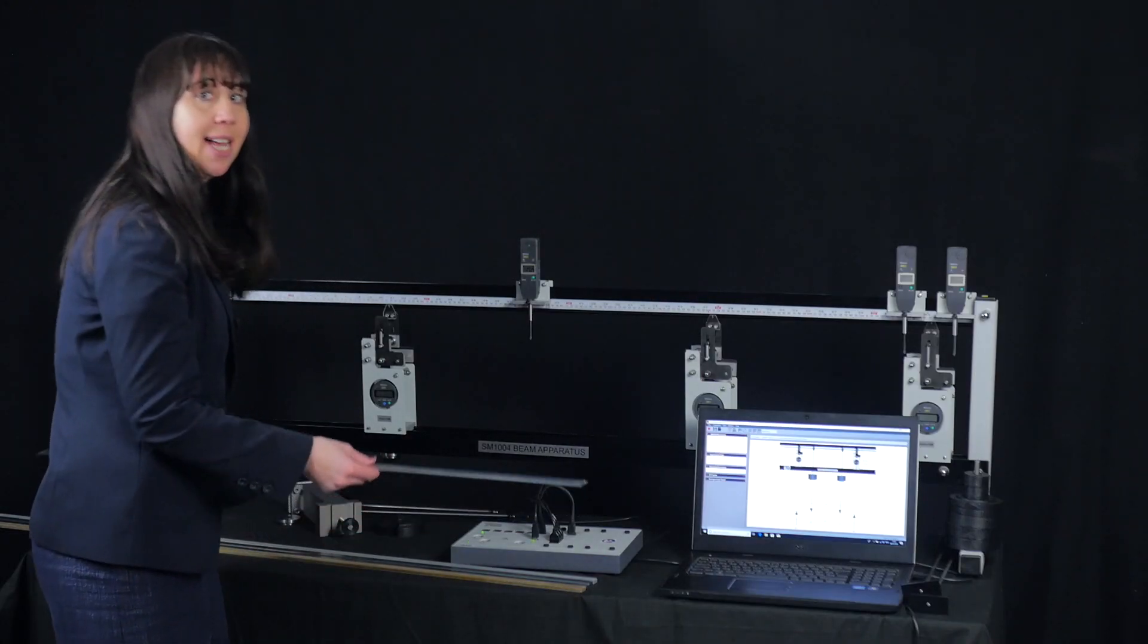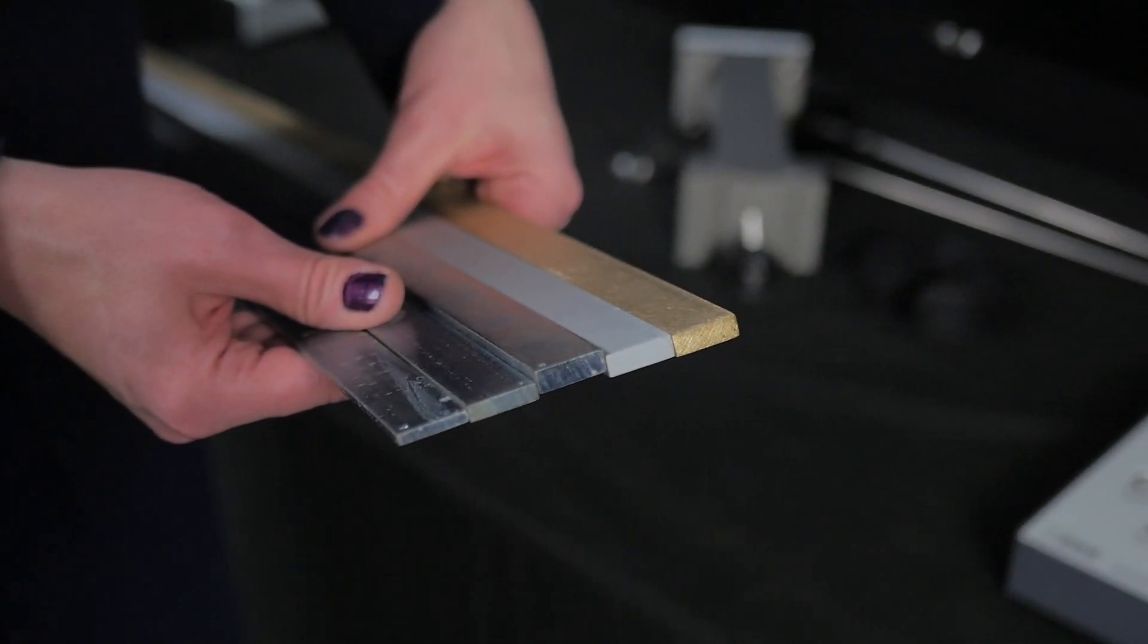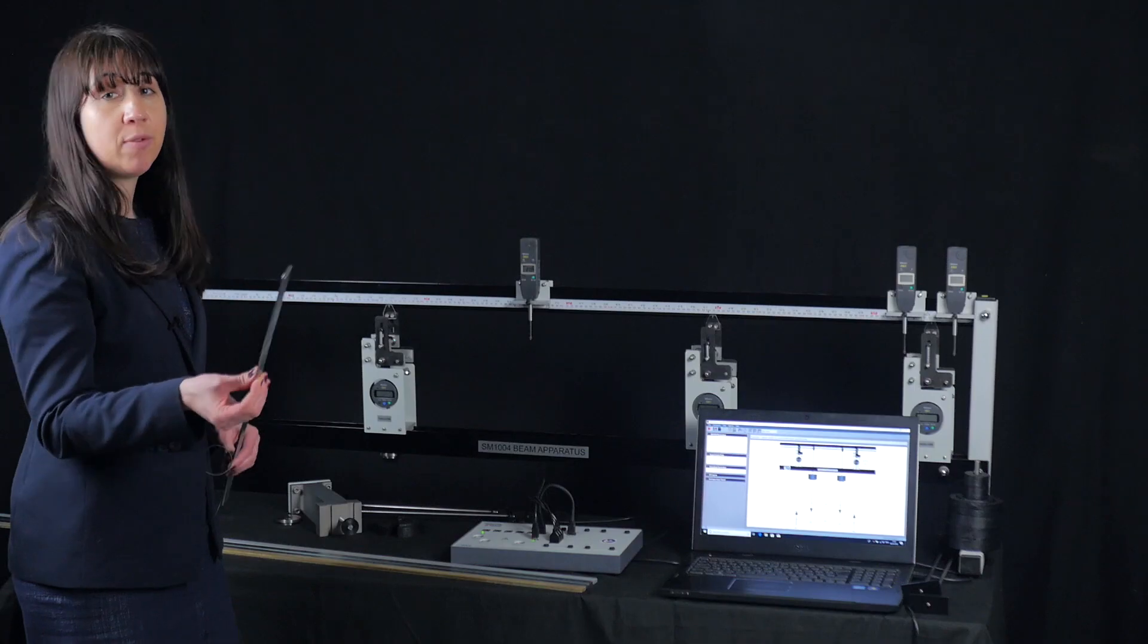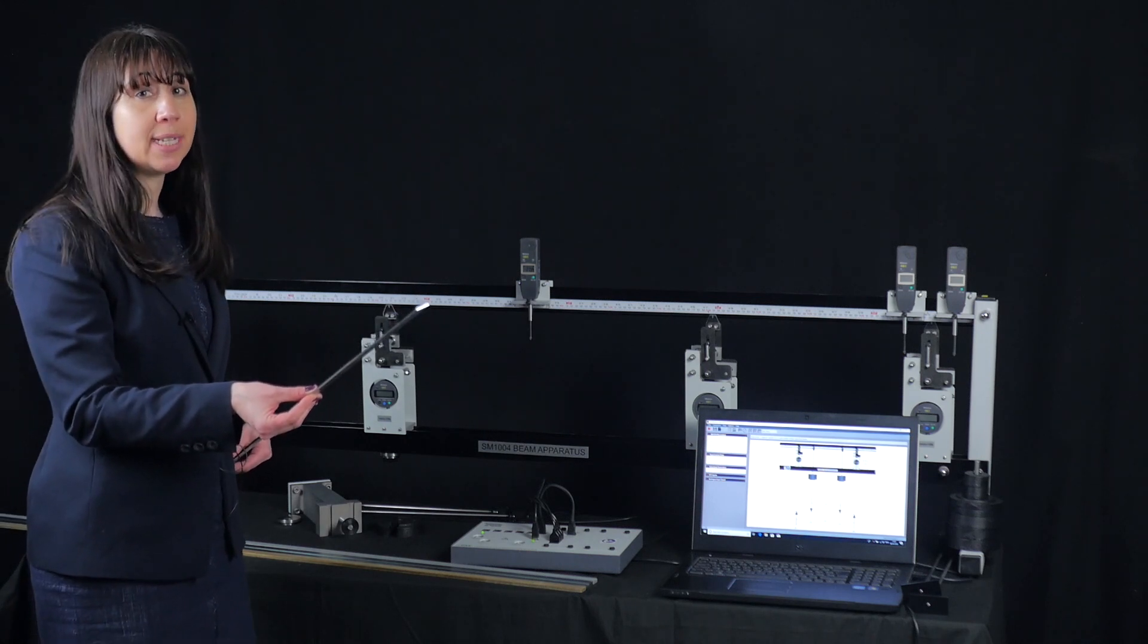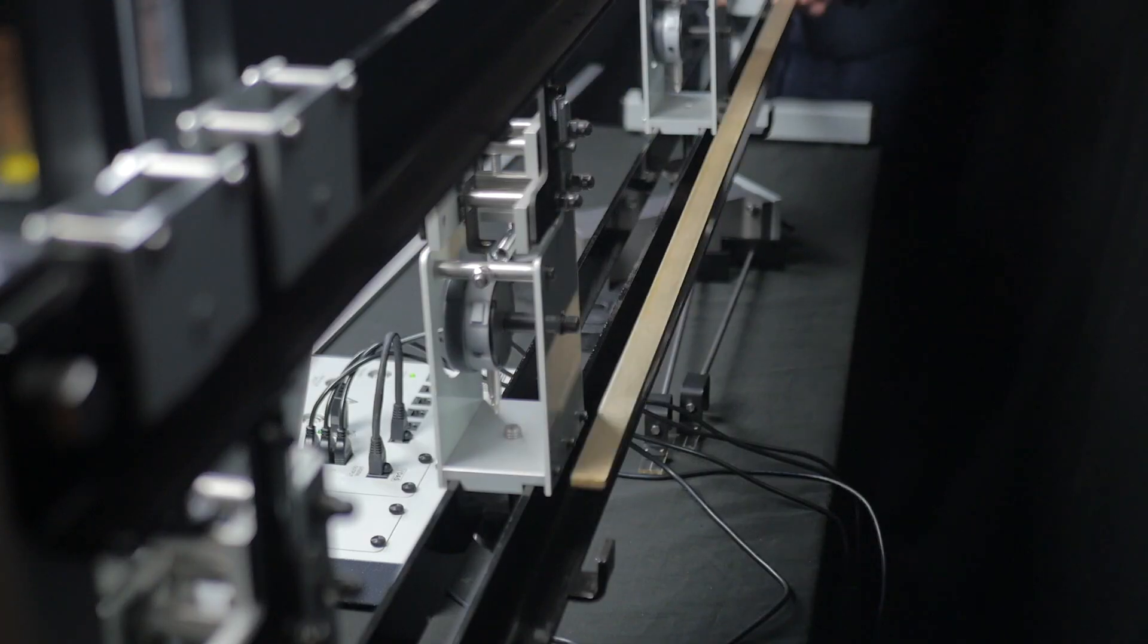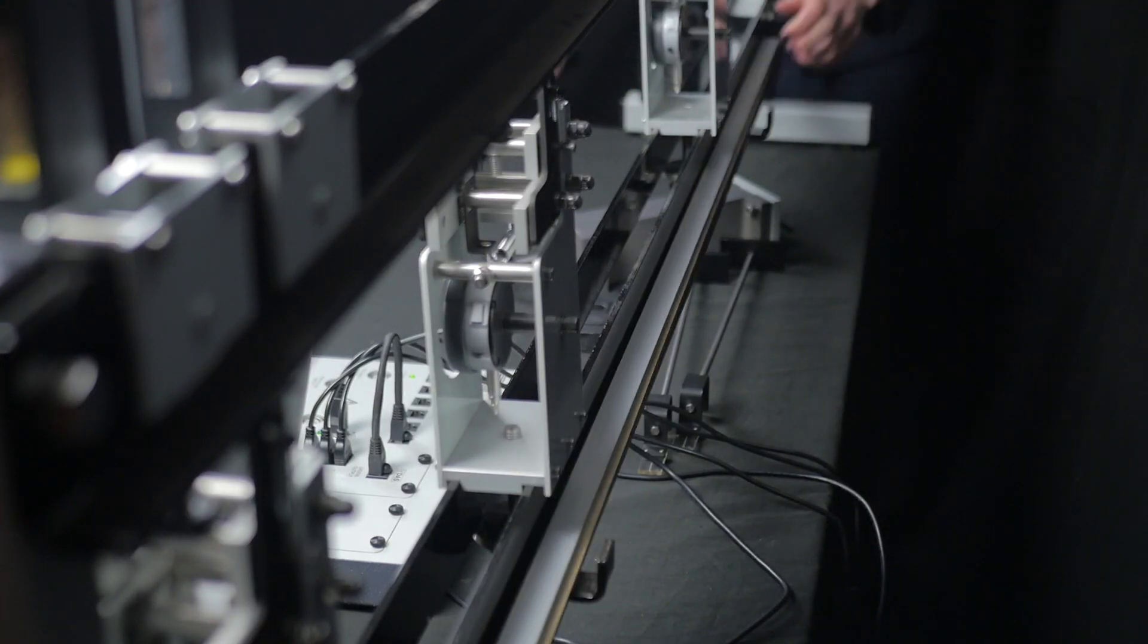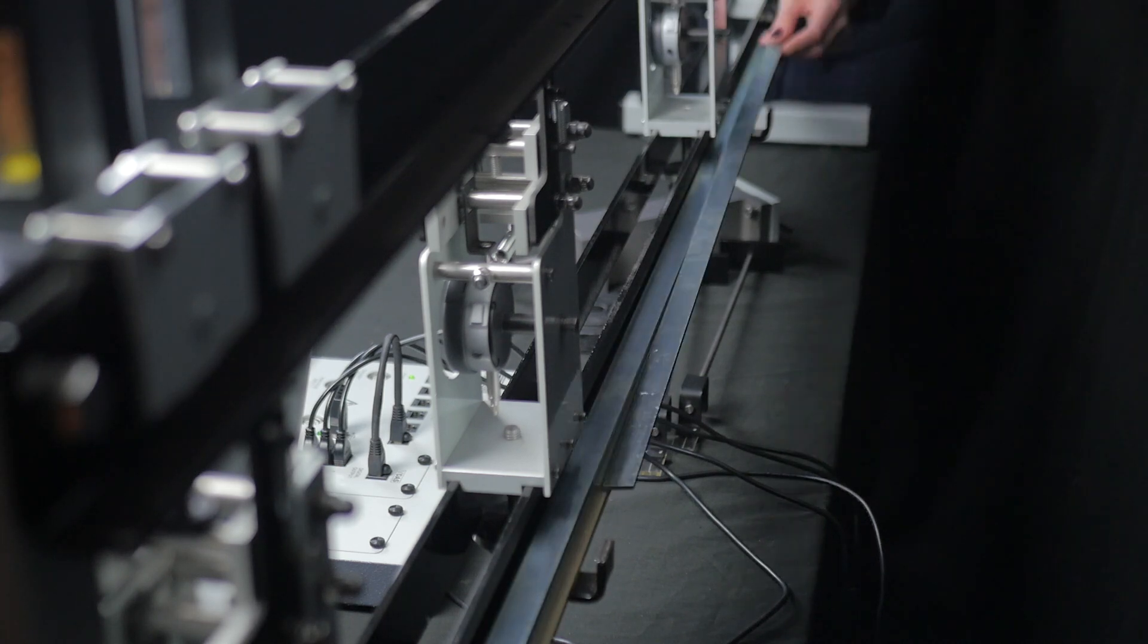Moving on to look at the beams—as standard, the apparatus comes with five beams: three of which are mild steel of different thicknesses (3.2 millimeters, 4.8 millimeters, and 6.4 millimeters), plus a brass and aluminum beam. A small thing but worthy of a mention: there are storage hooks at the back of the apparatus for storing your beams when not in use.